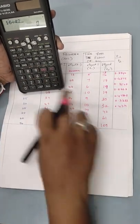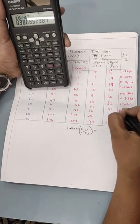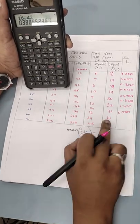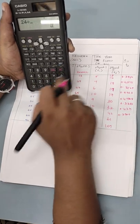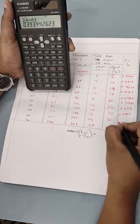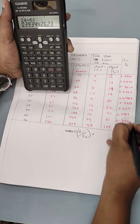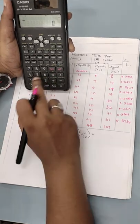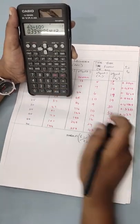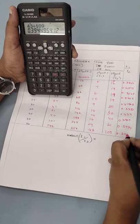16 divided by 42 is equal to 0.3809. 24 divided by 61, 0.3934. Then 43 divided by 10, 0.3944.